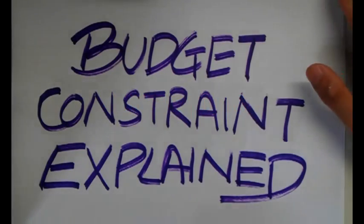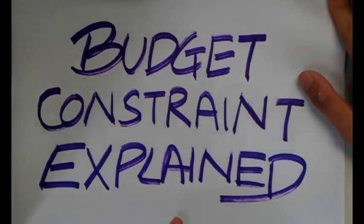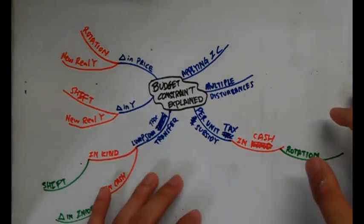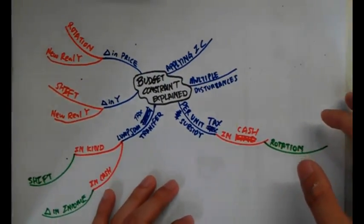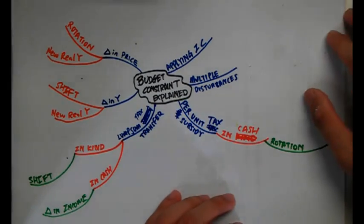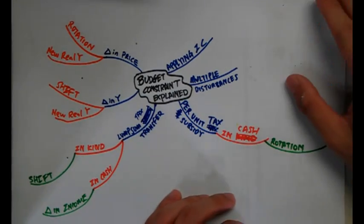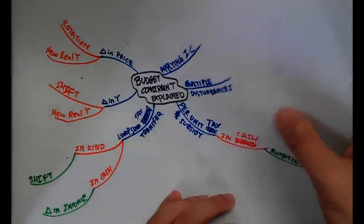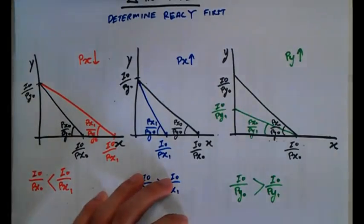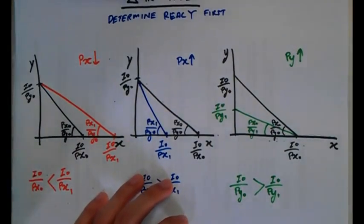Hi, today we'll be talking about the budget constraint. This is a mind map of the video, which is also downloadable on quickenomics.wordpress.com. We will first start with the change in price.